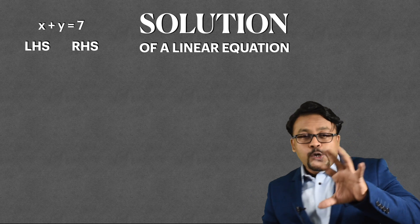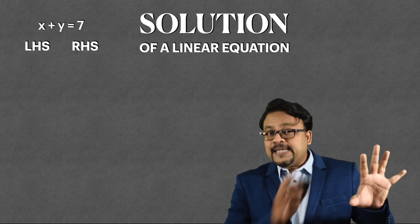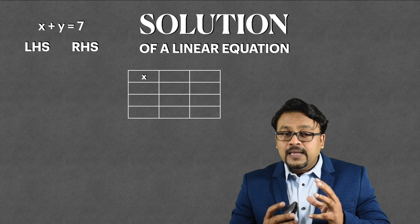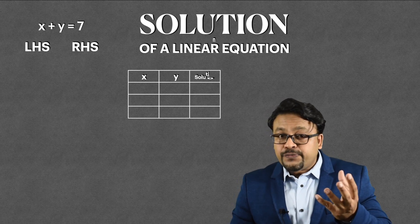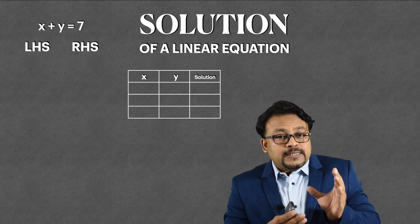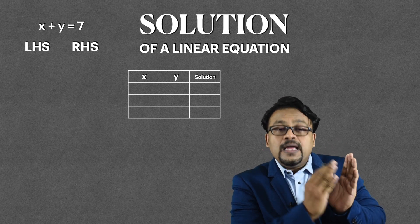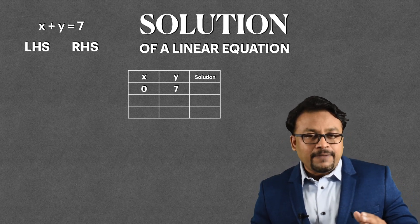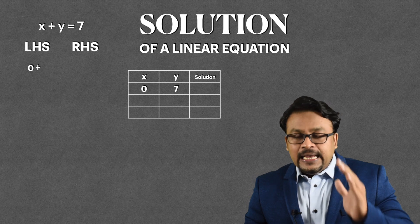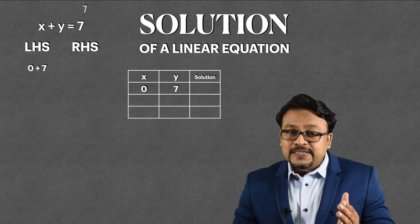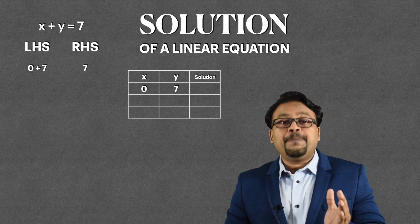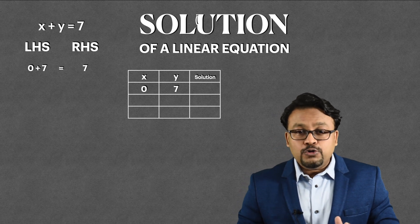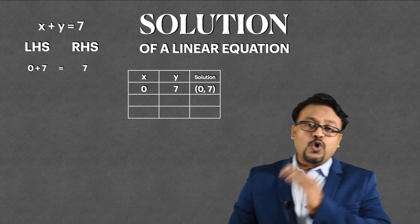Let me take an example. Let's say our equation is X plus Y equal to 7. So the left hand side is X plus Y and the right hand side is 7. I need to find values of X and Y which will satisfy the equation — that is, substituting them should give 7. Let us take X as 0 and Y as 7. If I substitute in the left hand side, I will get 0 plus 7, and the right hand side is 7. So LHS equals RHS, and whenever this happens those values are said to be the solution. So one solution of X plus Y equal to 7 is (0, 7).